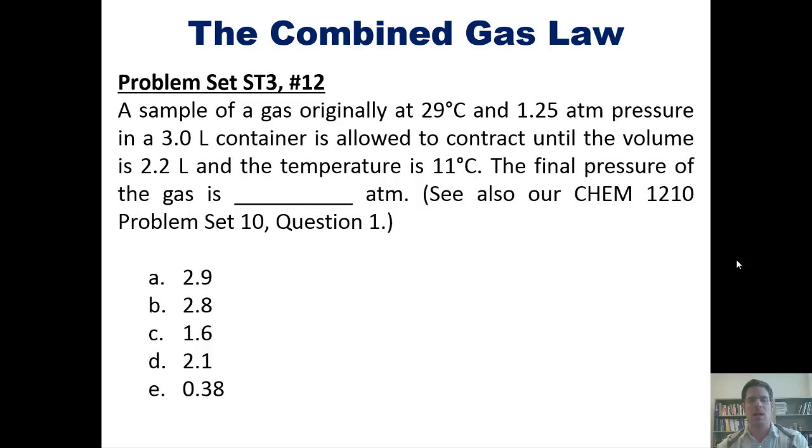Here's another question. A sample of a gas originally at 29°C in 1.25 atmospheres pressure in a 3 liter container is allowed to contract until the volume changes to 2.2 liters and the temperature changes to 11°C. The final pressure of the gas is what? Once again, you'll have to use the combined gas law, and be sure to change your degrees Celsius to Kelvins.